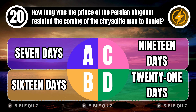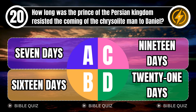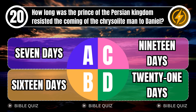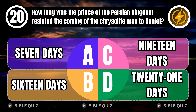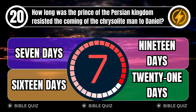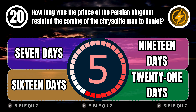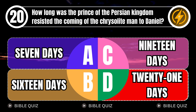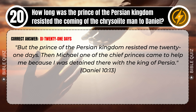Question 20: How long did the prince of the Persian kingdom resist the coming of the chrysolite man to Daniel? A. Seven days. B. 16 days. C. 19 days. D. 21 days. Correct answer: D. 21 days. Daniel 10 verse 13.